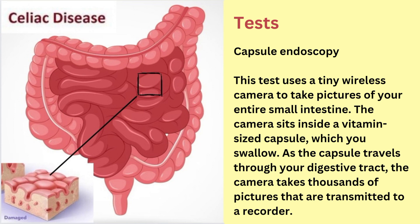The next test is capsule endoscopy. This test uses a tiny wireless camera to take pictures of your entire small intestine. The camera sits inside a vitamin-sized capsule which you swallow. As the capsule travels through your digestive tract, the camera takes thousands of pictures that are transmitted to a recorder.